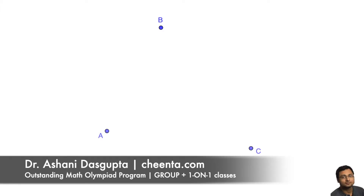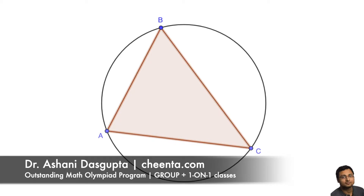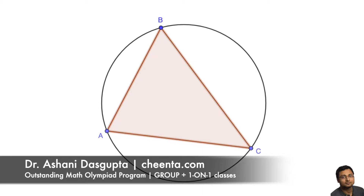We have a triangle ABC. Let us draw the circumcircle of this triangle — that is, the circle passing through A, B, and C.